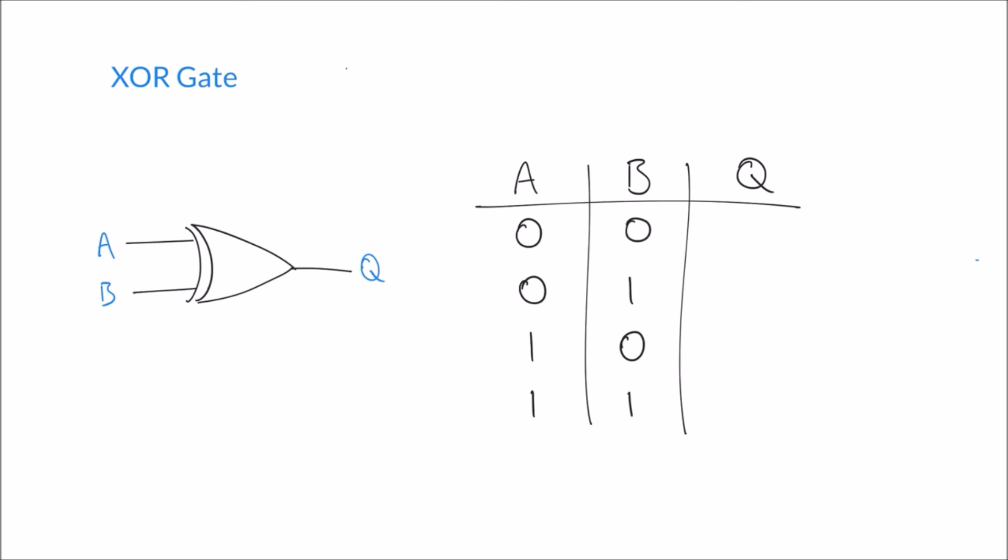Exclusive OR means exclusively one or the other but not both. If you remember in a normal OR gate, we would get a response of one from Q if A or B or both were one. So we'd get one, one, and one, but we'd get zero when A and B are both zero.